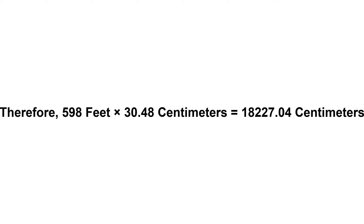Now we have to multiply 30.48 by 598. Therefore, 598 feet times 30.48 centimetres equals 18,227.04 centimetres.